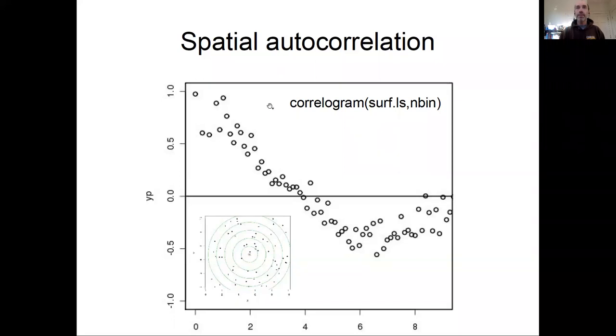In R, we can calculate a spatial autocorrelation function by using the correlogram function where we pass in what came out of that least squared surface detrending effort and some number of bins.